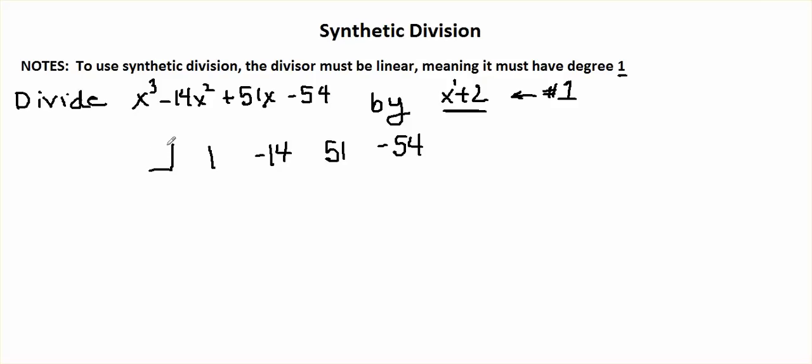How do I figure out what is going to go in my box over here? Well, I take my divisor x plus 2 and I set it equal to 0, and I solve. When I solve this I get negative 2. I'm going to put negative 2 in my box.